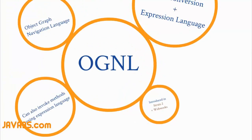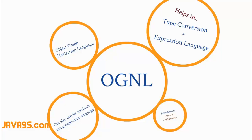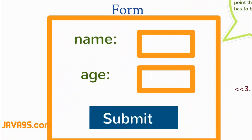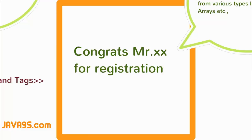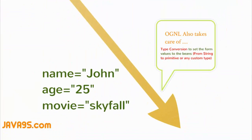Let's take a simple example of how OGNL works in a Struts 2 request flow. Consider a form that stores values into a Java bean, which are then accessed to show a response. The first step where OGNL comes in is type conversion: the parameters coming from the request are in string form and these values must be stored into Java types — either primitive types or custom data types. The type conversion part of OGNL handles converting those strings to the respective Java data types on the bean.